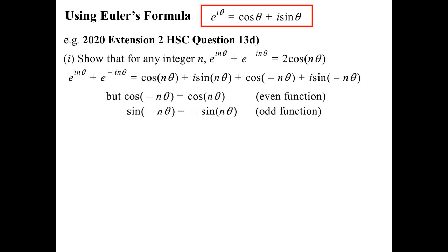Well e to the i n theta plus e to the minus i n theta becomes that. We then make a note that cos is an even function. Sine's an odd function. Therefore these things happen. There it is. 2 cos n theta. Comes out very nicely.